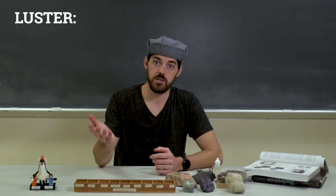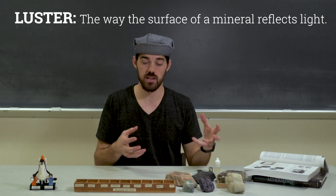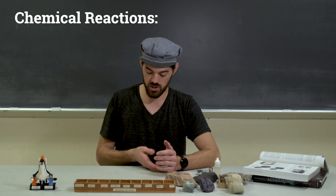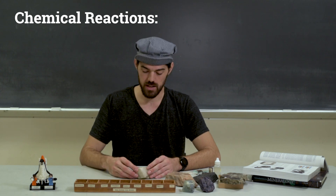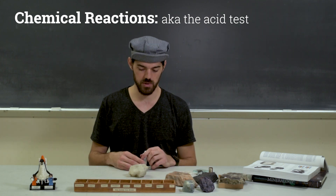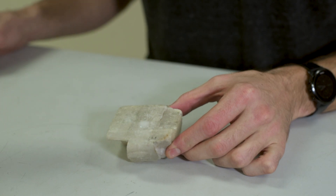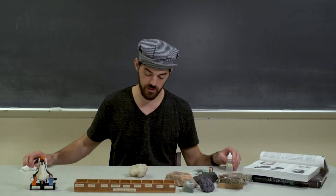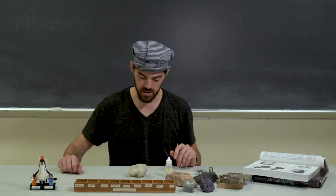We talked about luster in the geology museum — luster is just how that mineral interacts with the light around it. The last thing we look at is actual chemical reactions. Certain minerals react with certain chemicals, which can be super helpful in diagnosing the mineral. Calcite is a wonderful example — calcium carbonate reacts with hydrochloric acid. Geologists will carry a diluted bottle of hydrochloric acid, helpful in identifying carbonate minerals like calcite. Drop a little on there and you can see it just fizz away. If I was struggling between identifying this and quartz, I could drop the acid on it — it would do nothing on quartz, whereas here it's very diagnostic of calcite.